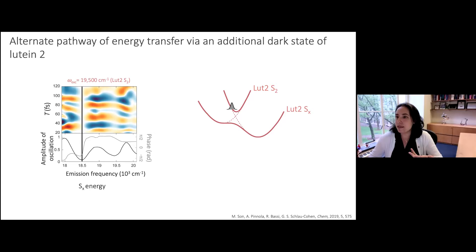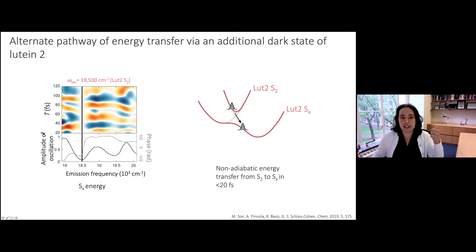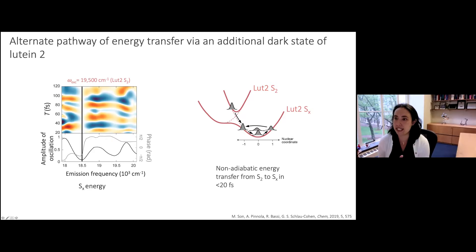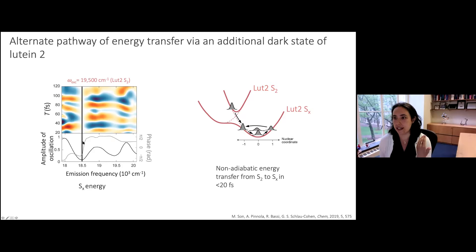This energy corresponds to a previously proposed dark state termed Sx within carotenoids bound to light harvesting complexes. The signatures of this oscillation — a phase jump and amplitude minimum — are consistent with the bottom of a potential energy well, observed at 18,500 wavenumbers after exciting into the lutein 2 S2 state. These observations are consistent with a non-adiabatic transition from the S2 state into a state with its potential energy well bottom at 18,500 wavenumbers, occurring incredibly quickly — we can observe oscillations starting at 20 femtoseconds.